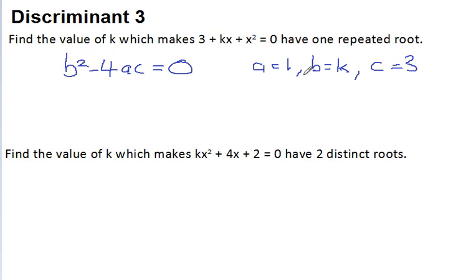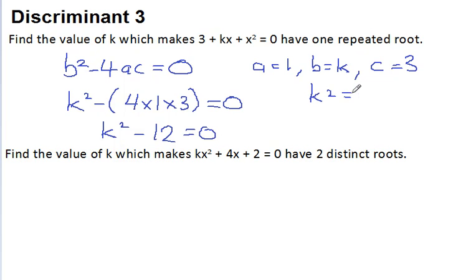So I just need to substitute those values into my equation now. So I've got k squared minus 4 times 1 times 3 equals 0. And if I simplify this, I get k squared minus 12 equals 0. Add 12 to both sides, I get k squared equals 12.